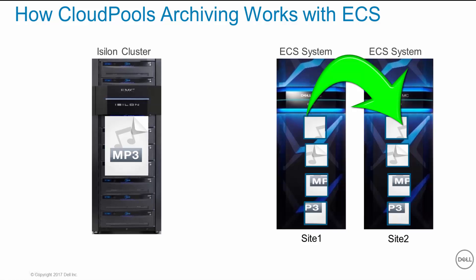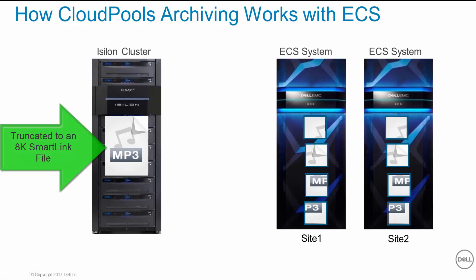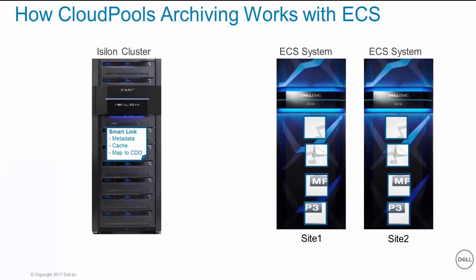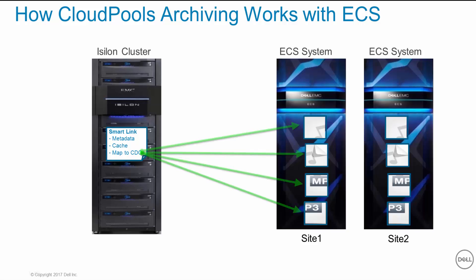After a file's data has been archived to the cloud, the file on the Isilon system gets truncated to an 8K SmartLink file. Each SmartLink file contains metadata that records archive details, a local data cache, and a map pointing to the cloud data objects.